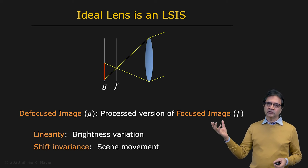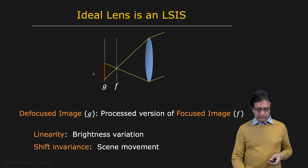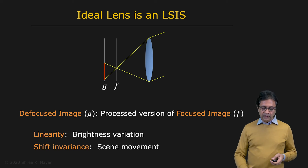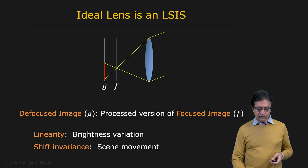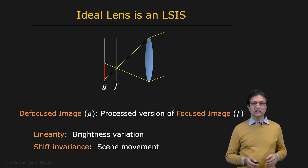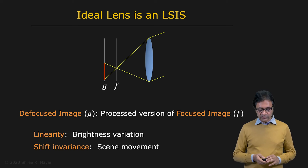For instance, if you increase the brightness of the scene, the brightness of the focused image is going to increase linearly, and so is the brightness of the defocused image g — that is linearity. If you shift an object in the scene, its image is going to shift in the focused image, and its defocused image is also going to shift by the same amount. So you have shift invariance between f and g. Here's an example of how a linear shift invariant system might manifest in an imaging system.